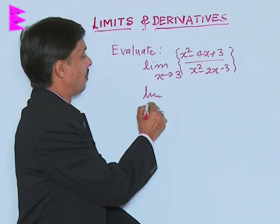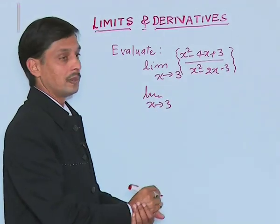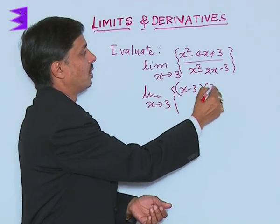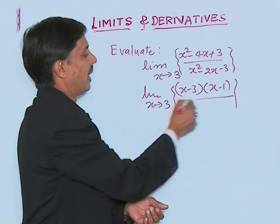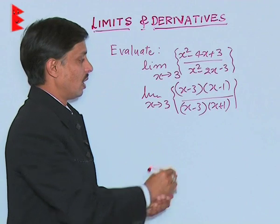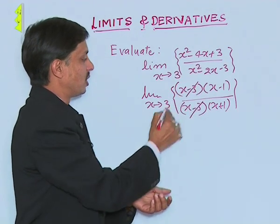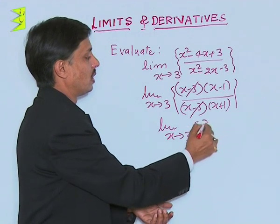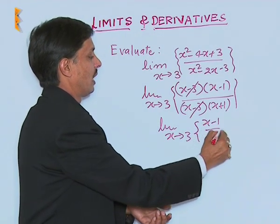We will operate it like this: limit x tending to 3. Factors of numerator will be x minus 3 into x minus 1, and in denominator it will be x minus 3 into x plus 1. This x minus 3 and x minus 3 is common, so we will write limit x tending to 3: x minus 1 upon x plus 1.